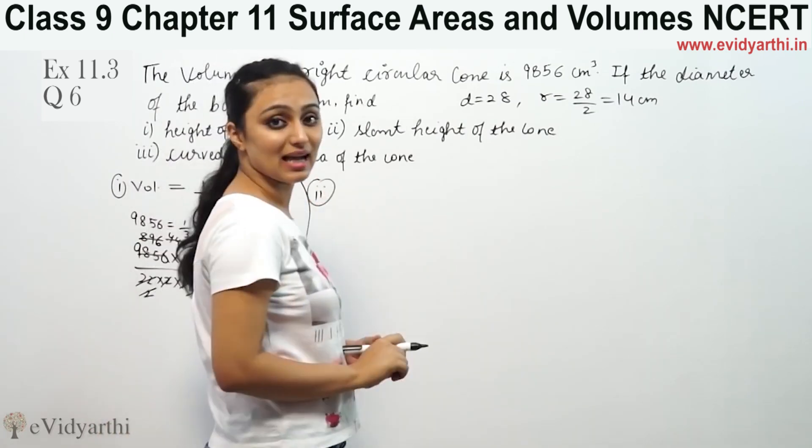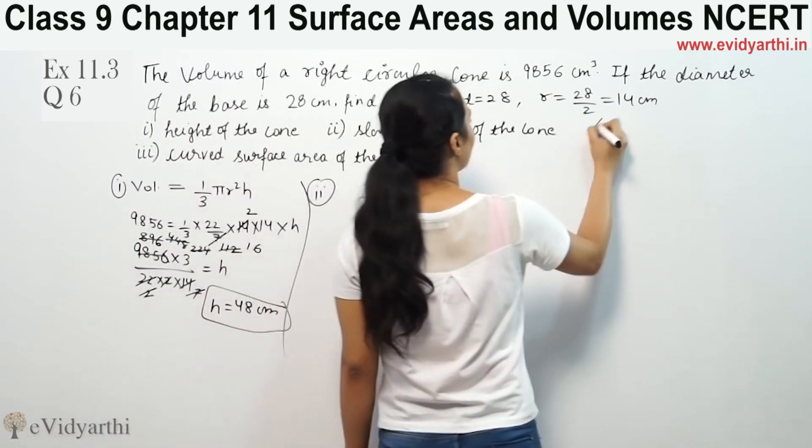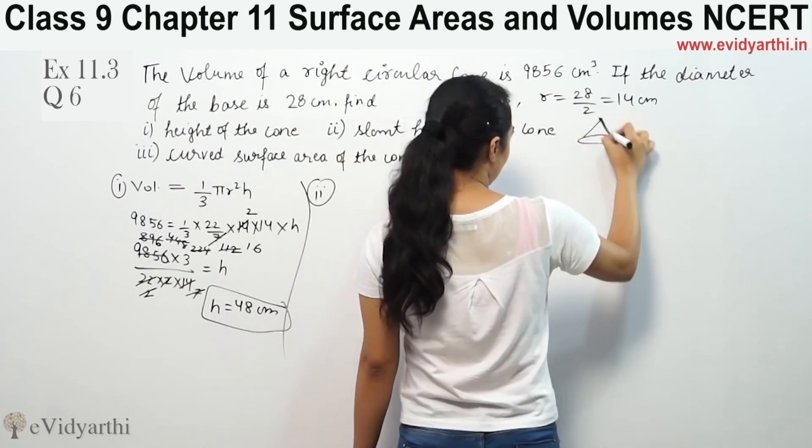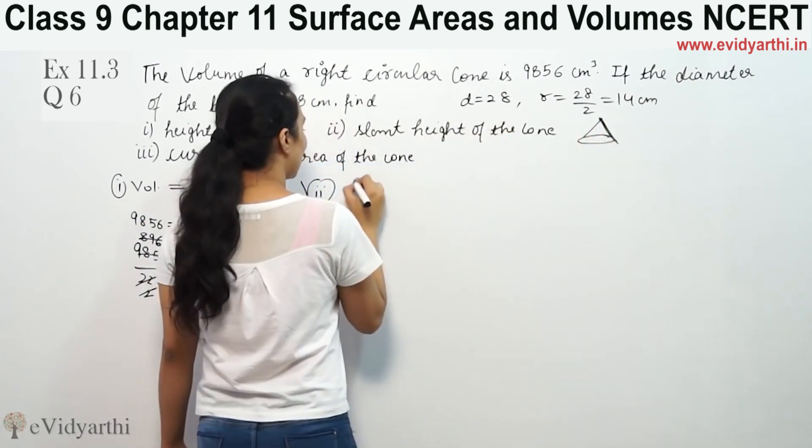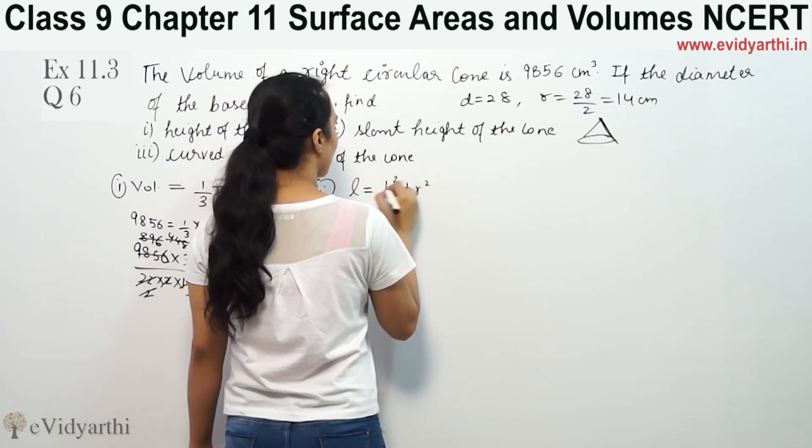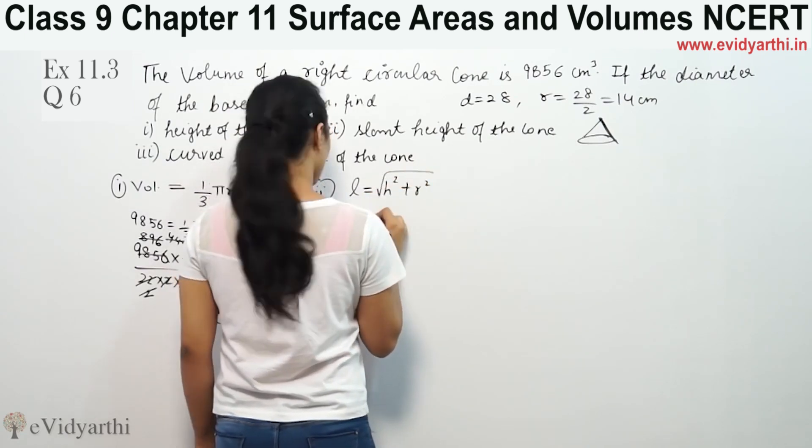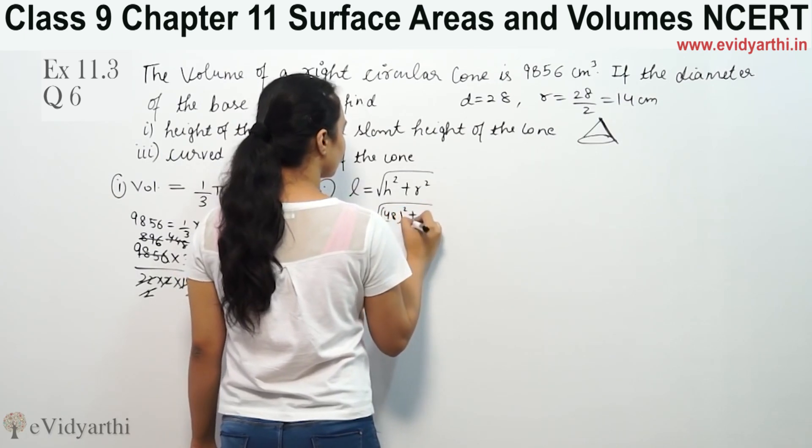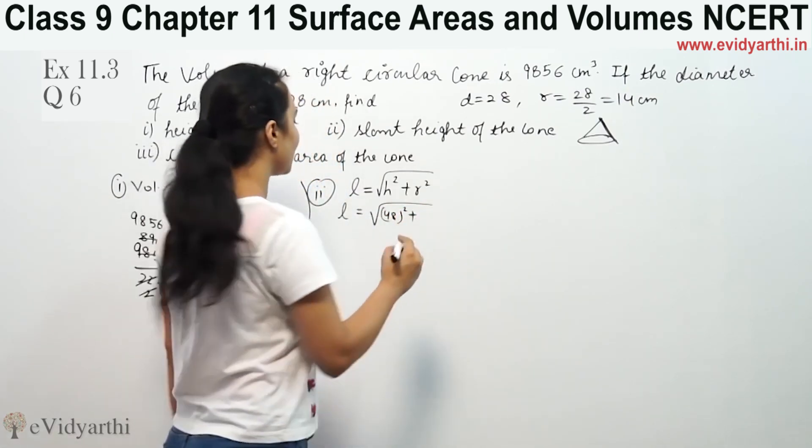Second case, we are asking for slant height. Slant height means, if this is a cone, slant height L is equal to square root of h² plus r².